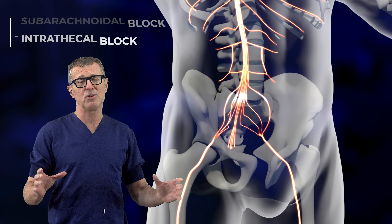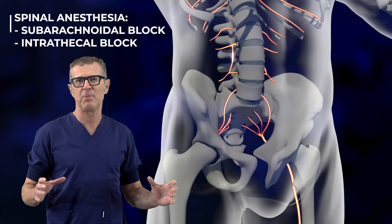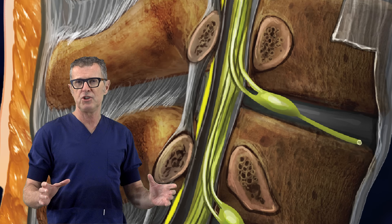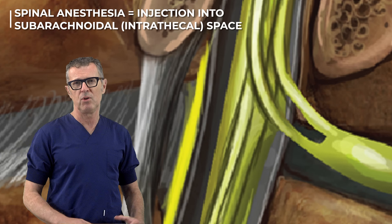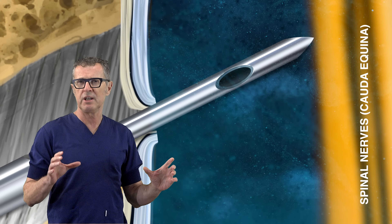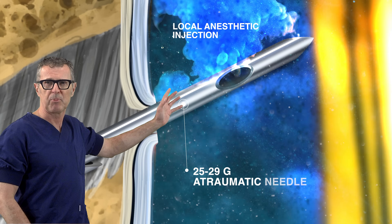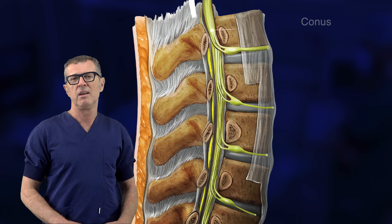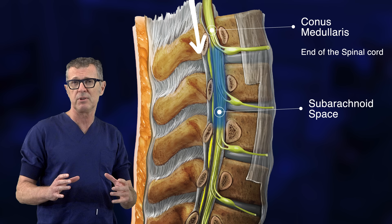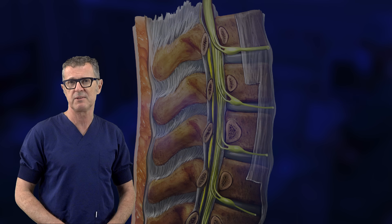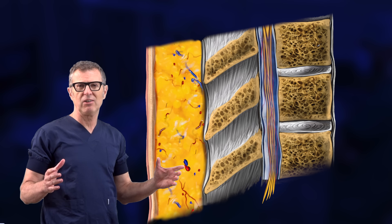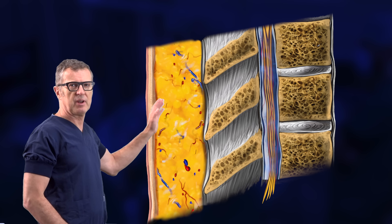Spinal anesthesia, also called a spinal block, subarachnoid block, or intrathecal block, is an injection of local anesthetic or opioid into the subarachnoid space. The injection is usually done using a very fine needle placed into the spinal canal below the conus medullaris and into the subarachnoid or intrathecal space. In performing a lumbar puncture or spinal anesthesia, the needle has to pass through several different layers.